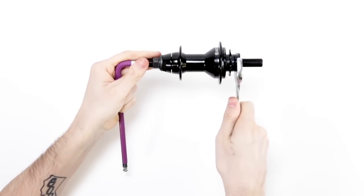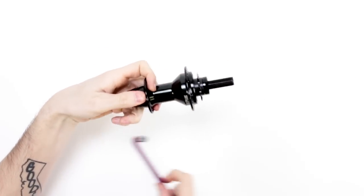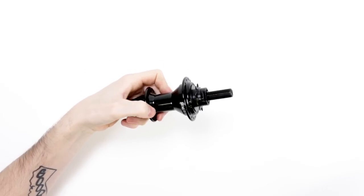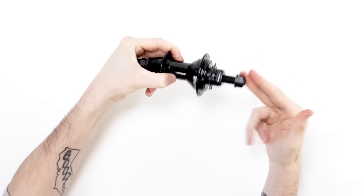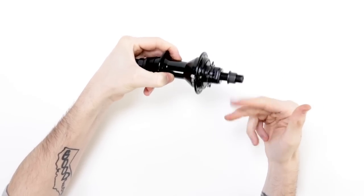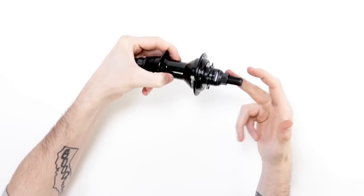Then simply slide on the hardware and the hub's ready to go. If you then wish to convert back to free coaster mode you simply repeat these steps but in reverse. Hope this how-to video helped. For any more information please head to saltbmxparts.com.